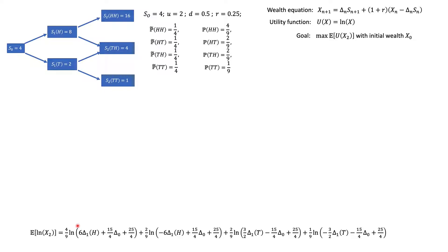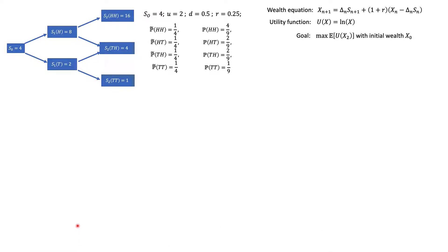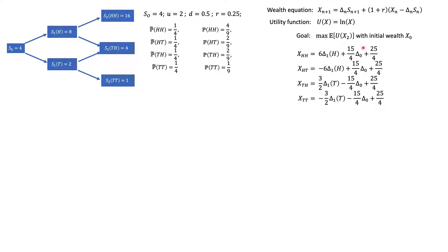Here I will take a different approach to derive the same numbers using a different method. As a reminder, the value of our wealth at time 2 if we get two heads is defined by this equation; the value if the stock goes up then down (head then tail) is given by this equation; and so on for the other portfolio values.